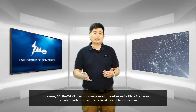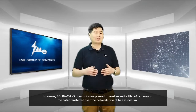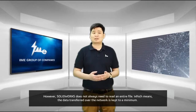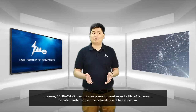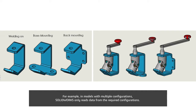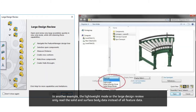However, SOLIDWORKS does not always need to read an entire file, which means the data transferred over the network is kept to a minimum. For example, in a model with multiple configurations, SOLIDWORKS only reads the data from the required configurations. In another example, the lightweight mode or large design review only reads the solid and surface body data instead of all the features data.